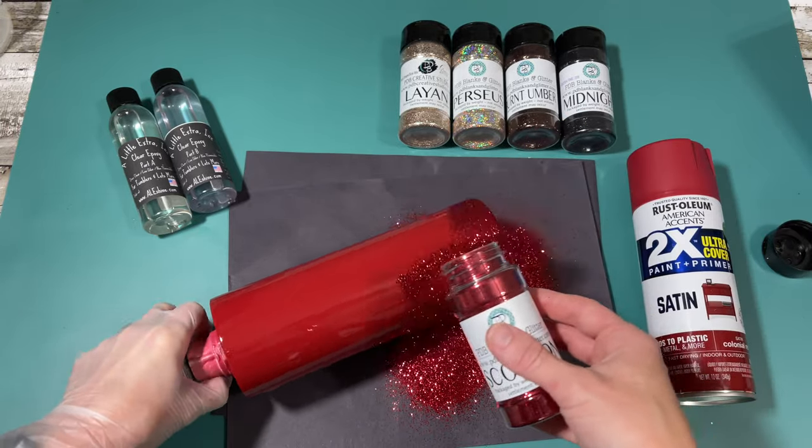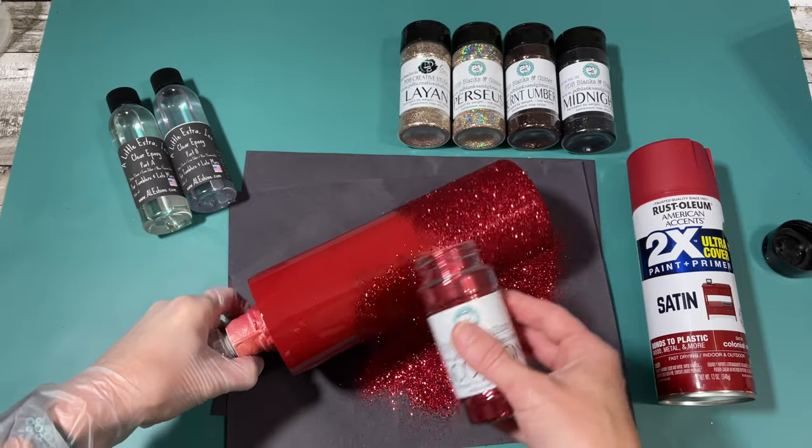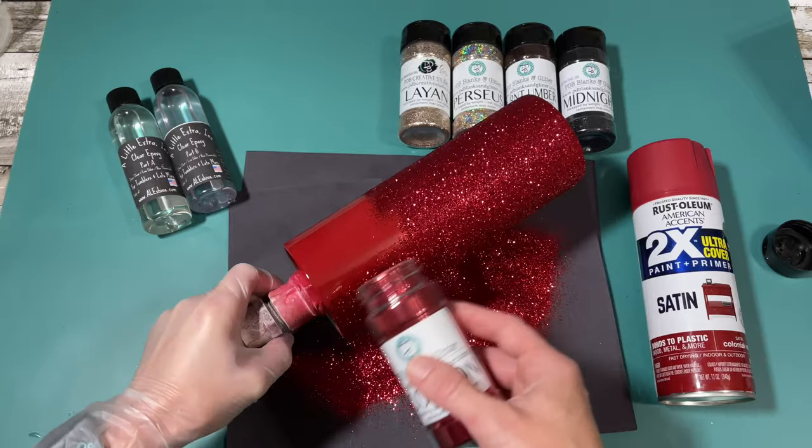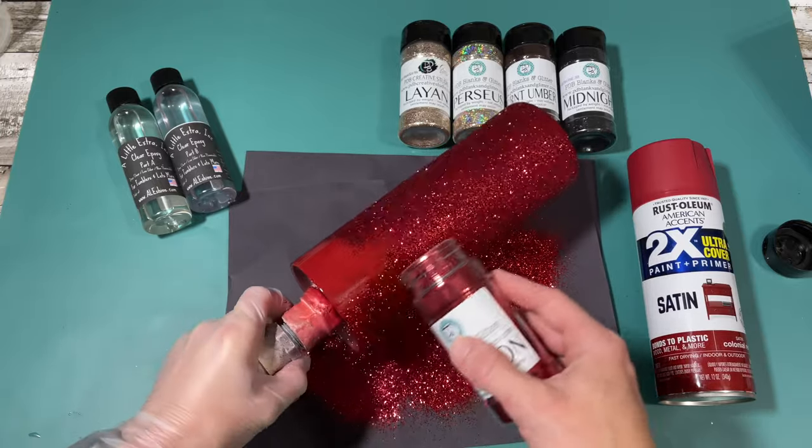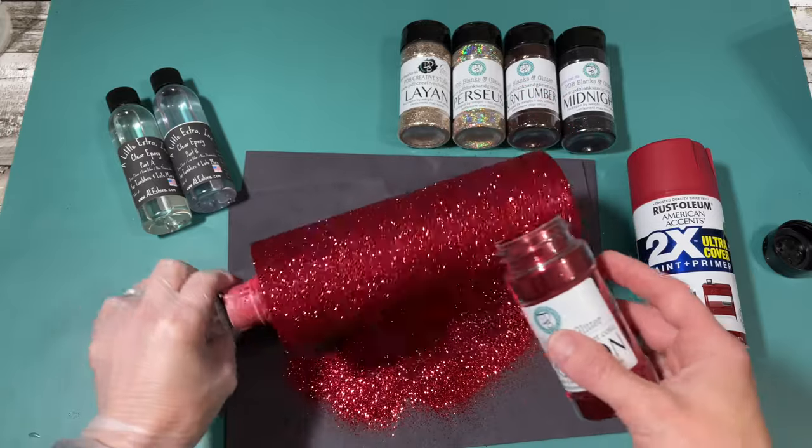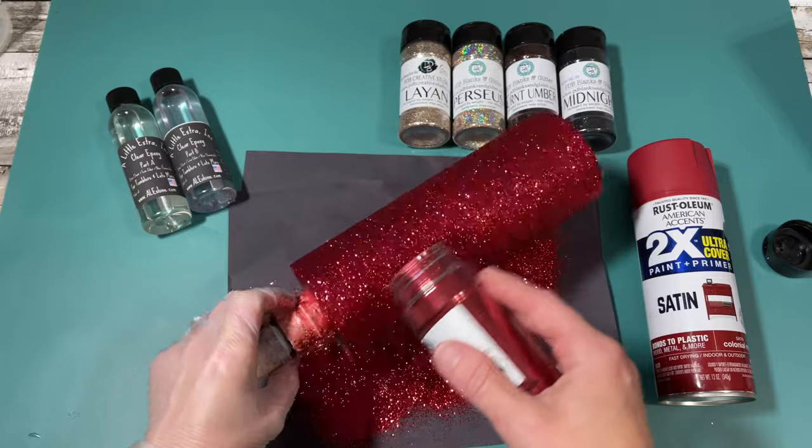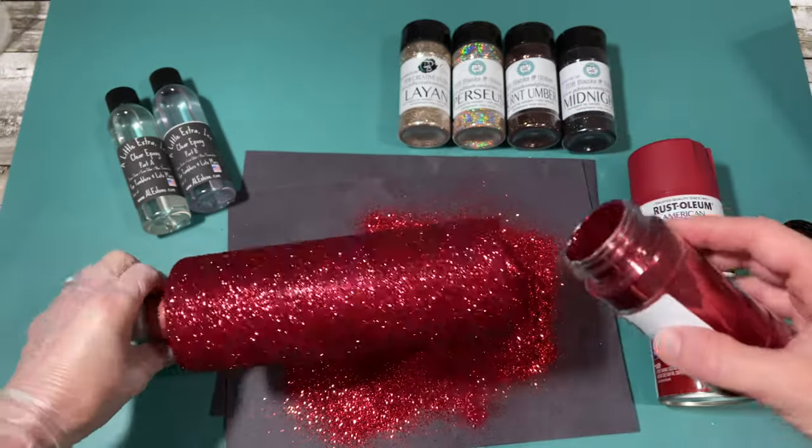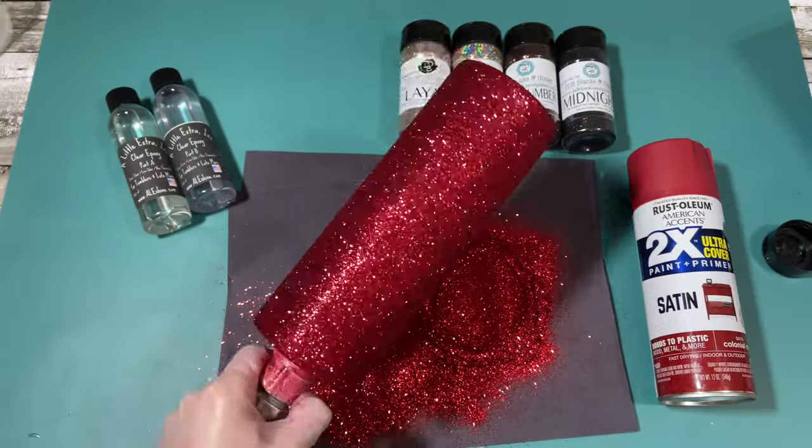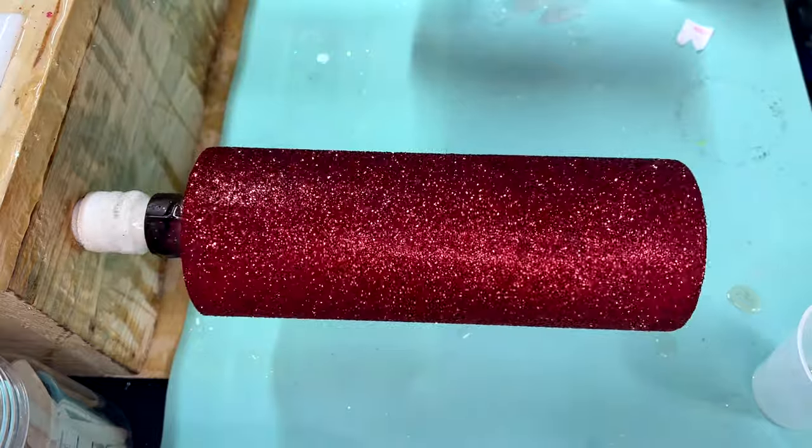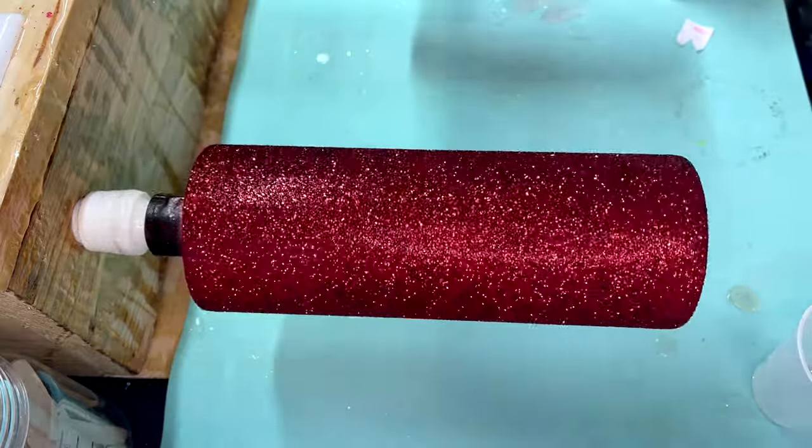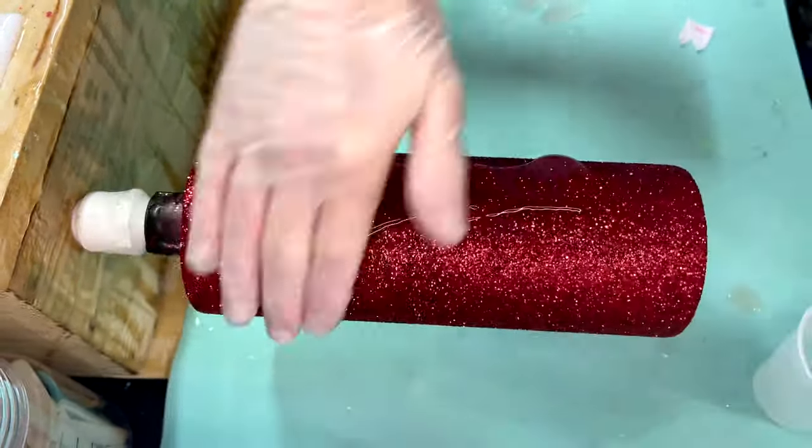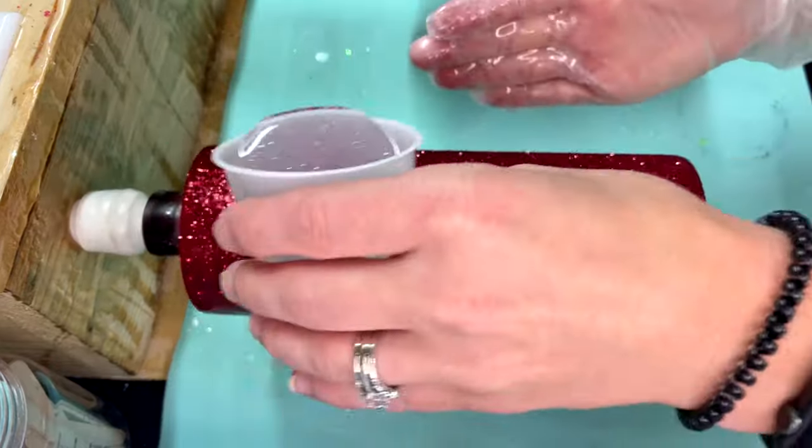Pretty simple. Just pour the glitter onto the tumbler. Sometimes I get a little carried away thinking this is so easy because it's just one glitter color. Pay close attention to make sure that you get all areas completely covered in glitter. What I usually do is just push the bottom of my cup onto the excess glitter that has fallen off. You're going to tap that off and let it sit for about four hours with Little Extra Ink epoxy, and then you can move directly into applying the first coat.